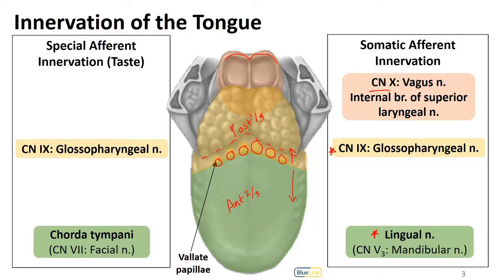In terms of special sensory — or special afferent taste — anterior to the vallate papillae, these will be through chorda tympani. Chorda tympani is a branch off the facial nerve which hitchhikes or follows the pathway of lingual nerve to the tongue. Posterior to those vallate papillae, and including them, special sensation or taste will be carried by the glossopharyngeal nerve. So the posterior one-third is all glossopharyngeal, with some overlap from vagus, and anteriorly taste is carried back with facial nerve through chorda tympani.